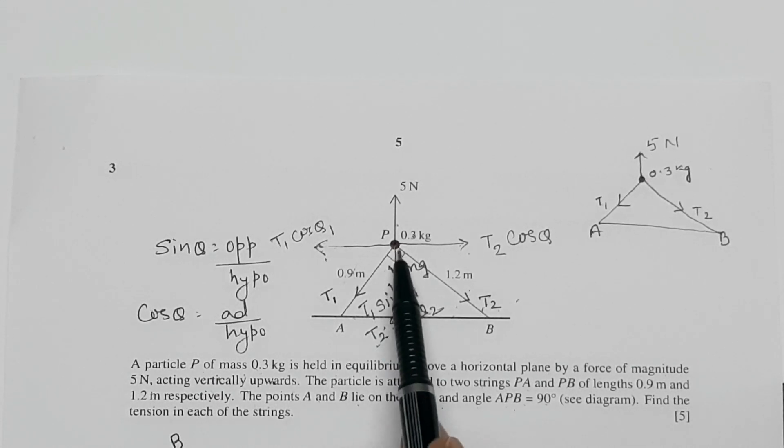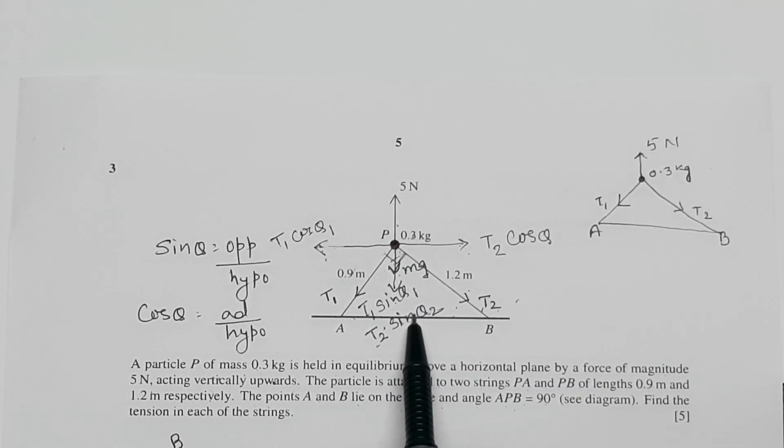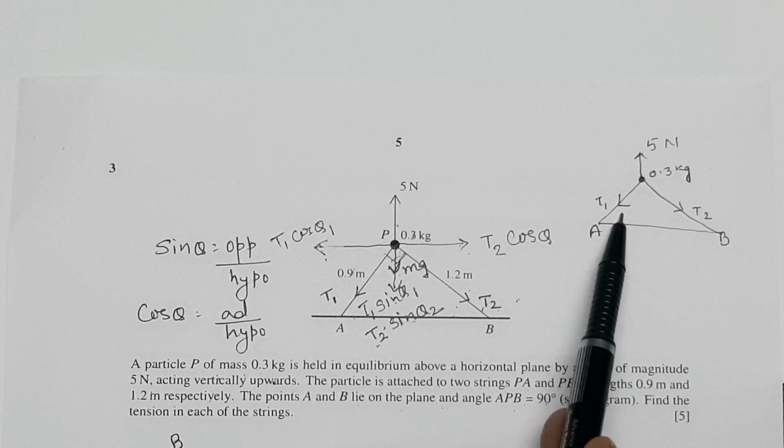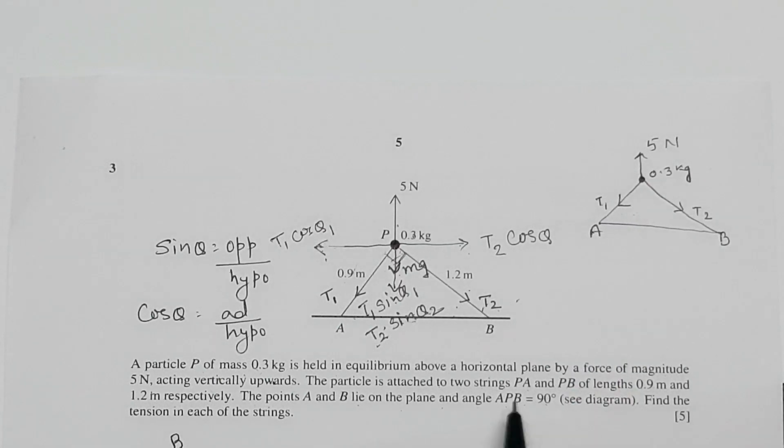The point A and B lie on the plane and angle APB is equal to 90 degrees. So this is the angle APB that is equal to 90 degree. Since I have done the forces you can't see it properly but I have done another diagram here. So we will see the component force over here neatly. Find the tension in each strings.